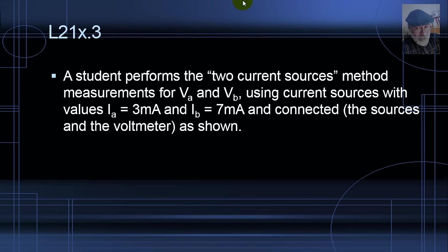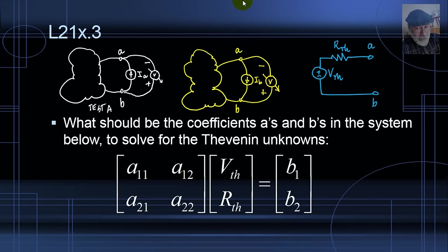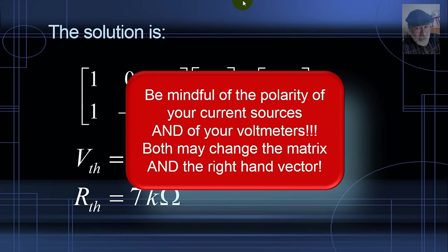Think about this exercise. Read it. Stop the tape and work on that, will you? And then after that, you may unfreeze the video and see the solution. The lesson here is be mindful of the polarity of your current sources and of your voltmeters. Both may change the matrix and the right-hand vector of your system model.